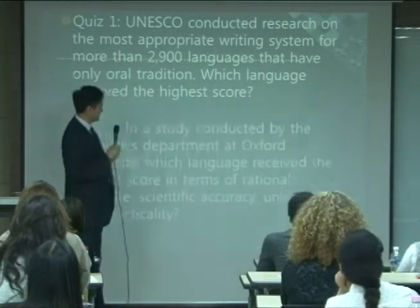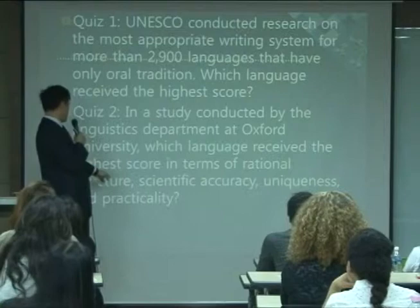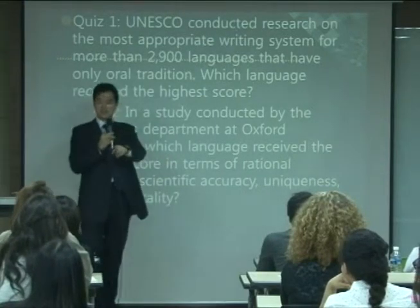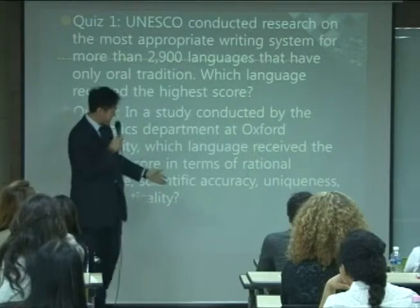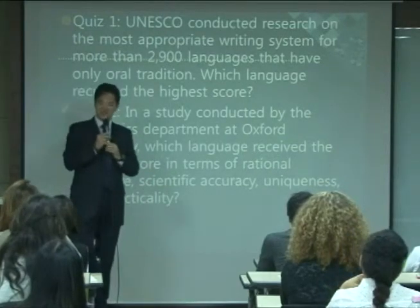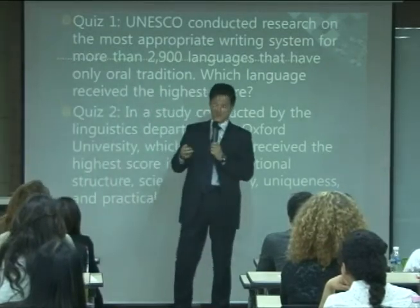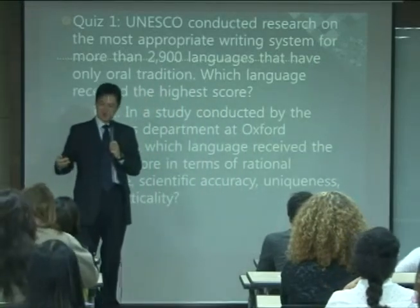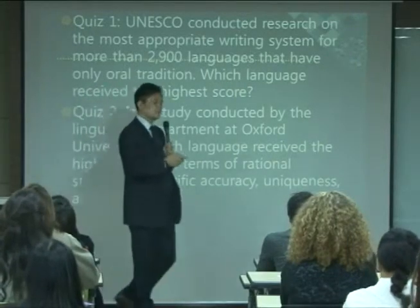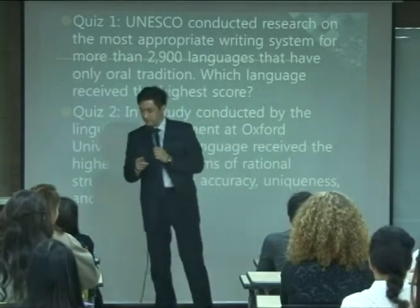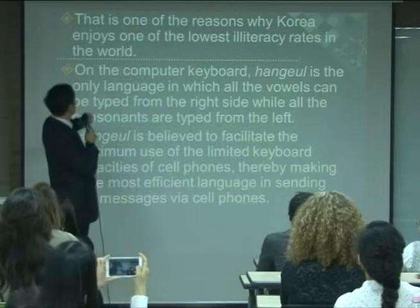In a study conducted by the linguistics department at Oxford University, which language received the highest score in terms of rational structure, scientific accuracy, uniqueness, and practicality? Korean again. Korean students, are you proud? As I told you at the beginning of this course: you should have pride in your culture, but never be arrogant. There is one reason why Korea enjoys one of the lowest illiteracy rates in the world.